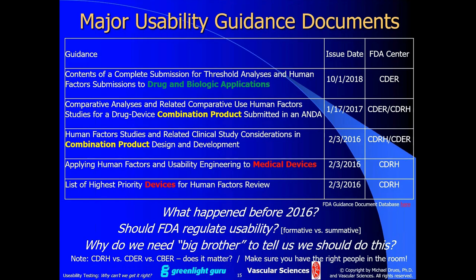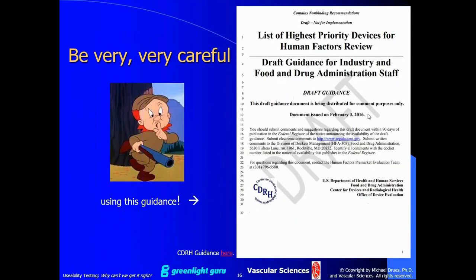The guidances are highlighted based on their categories: the bottom two are medical device guidances; the two above are combination products; and the one on the top is drugs and biologics. It's very easy to dismiss a combination product or drug and biologic guidance if you're only working on a medical device — I think that's a huge mistake. There's a lot of commonality, especially in usability testing, between these categories. Don't be myopic. Make sure you have a broader view of the universe.